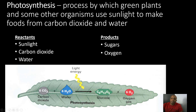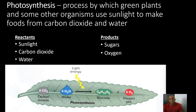Let's go over the basics of photosynthesis. Photosynthesis is a process by which green plants and some other organisms use sunlight to make food from carbon dioxide and water. There are three basic reactants for photosynthesis: sunlight, carbon dioxide, and water, and the products produced are sugars and oxygen.